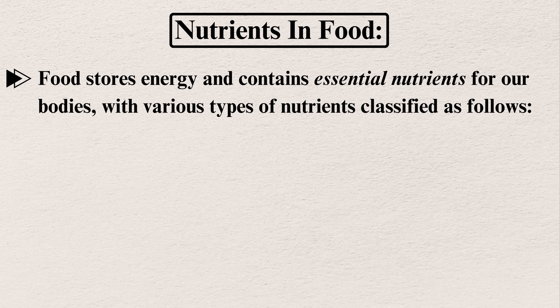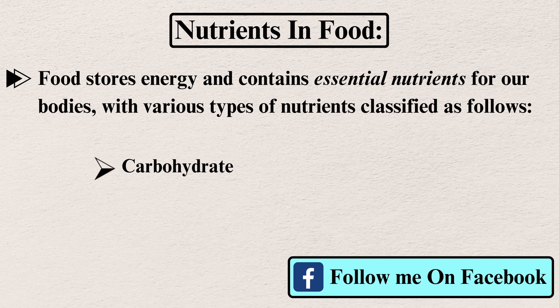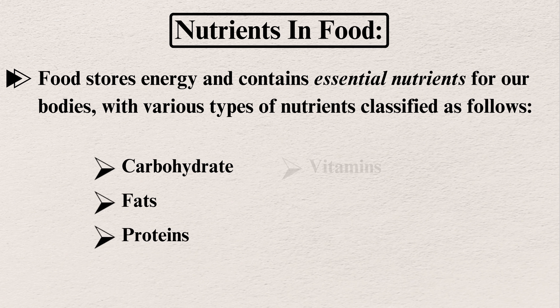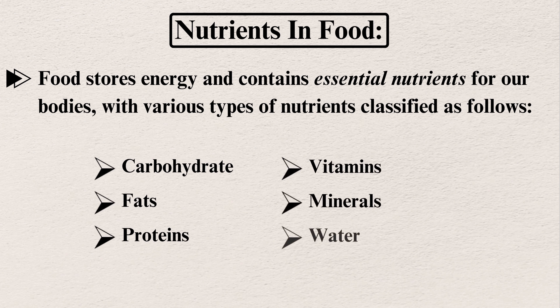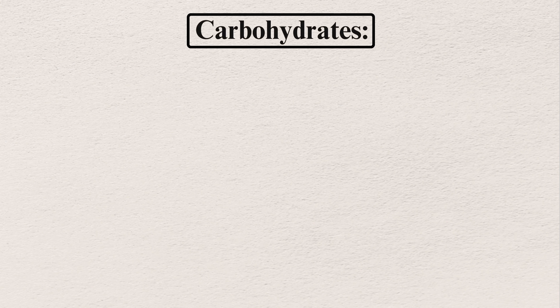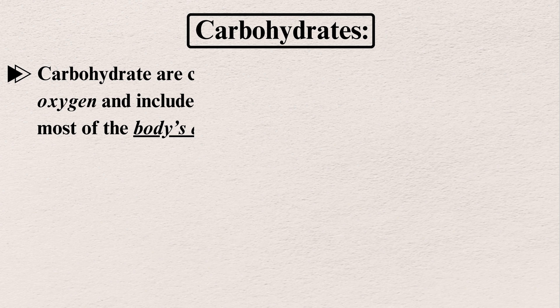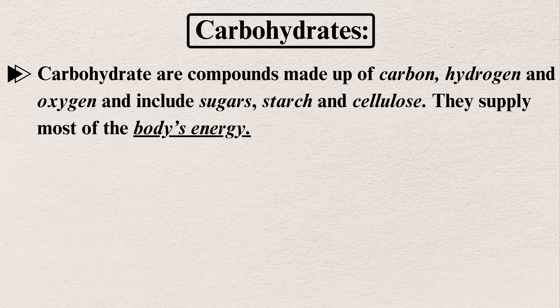Dear students, first we'll talk about the nutrients in food. Food stores energy and contains essential nutrients for our bodies, with various types of nutrients classified as follows: carbohydrates, fats, proteins, vitamins, minerals, and water. First we'll talk about carbohydrates.